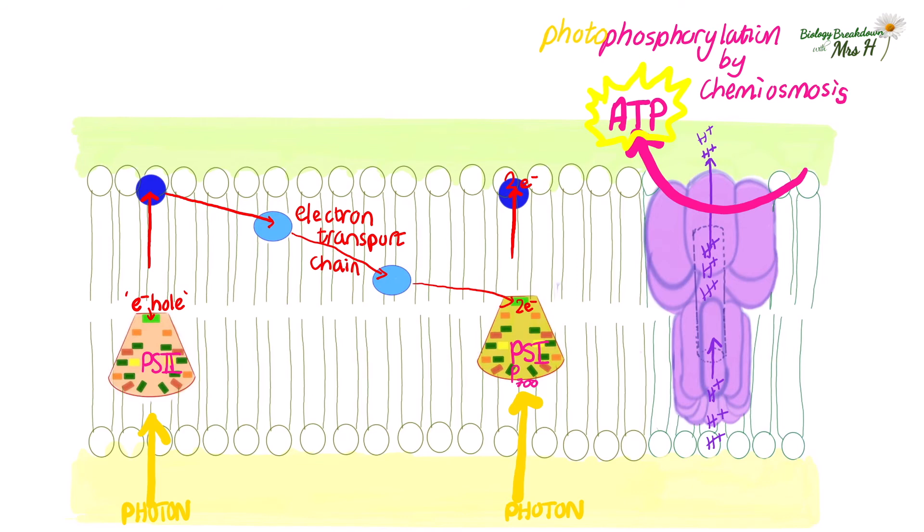Now what happens is this electron hole pulls electrons from a water molecule causing that water molecule to split. The splitting of water is called photolysis and the electrons from the water molecule fill the hole at photosystem 2. And then we're left with half a molecule of oxygen which is released. So that's where our oxygen comes from in photosynthesis. And that could be used in plant respiration or it could diffuse out of the plant.